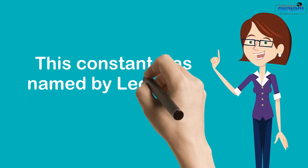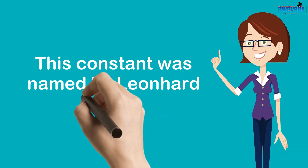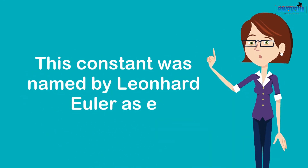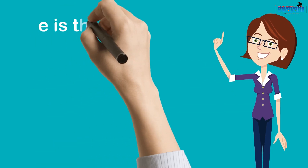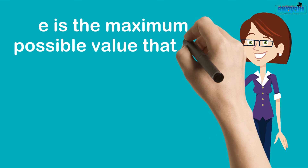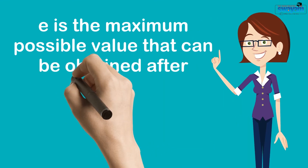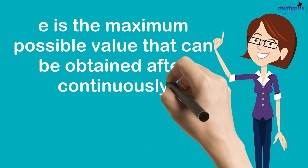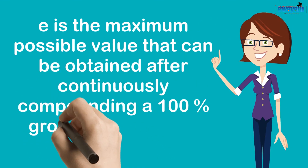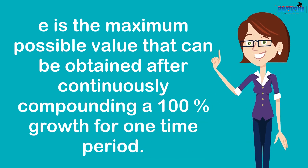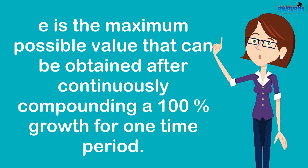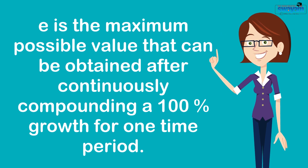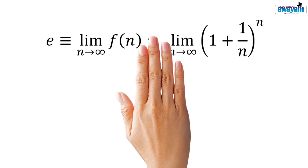This constant was named by Leonard Euler as E. Now we are in a position to define E. E is the maximum possible value that can be obtained after continuously compounding a 100 percent growth for one time period. Mathematically, E may be expressed as the limit of (1 + 1/N)^N as N approaches infinity.